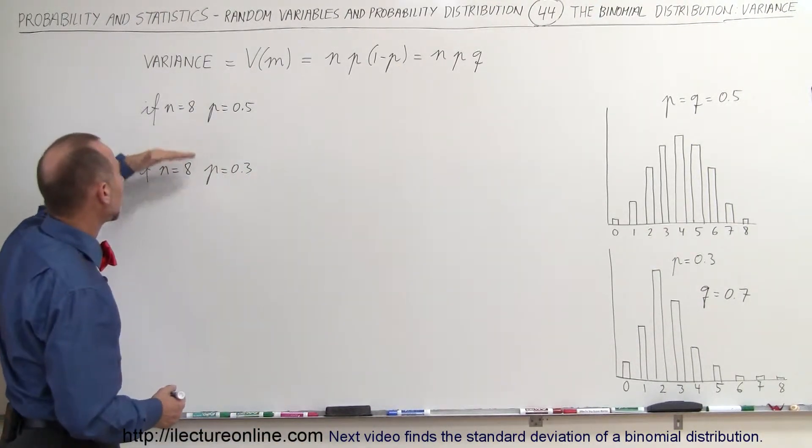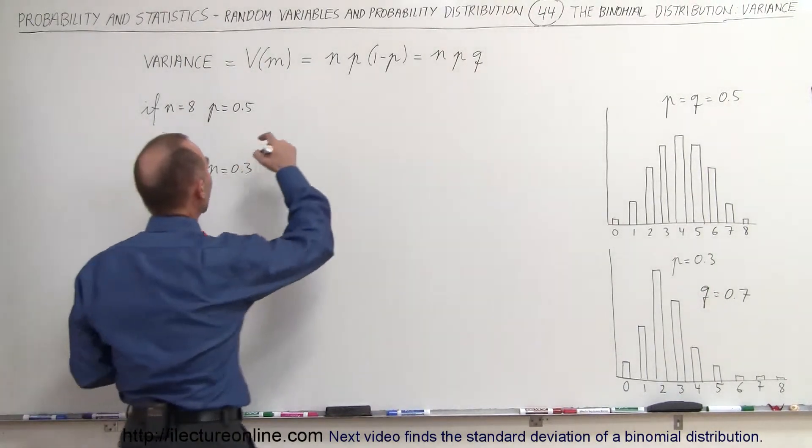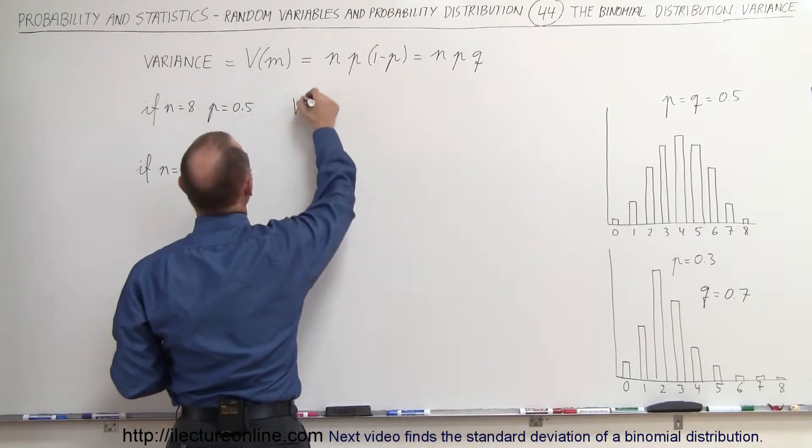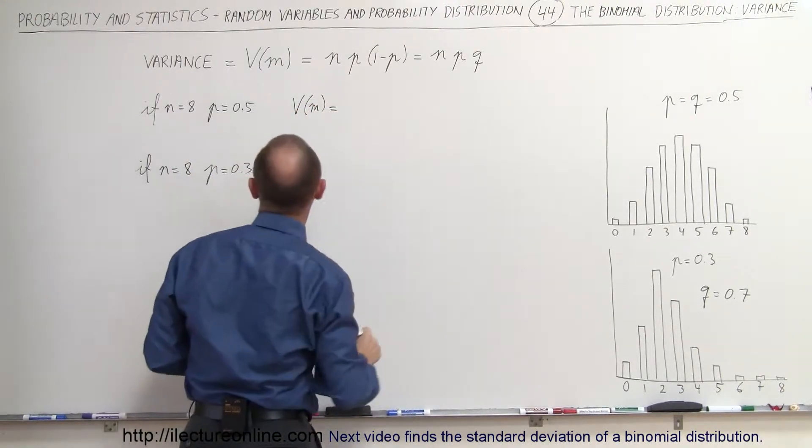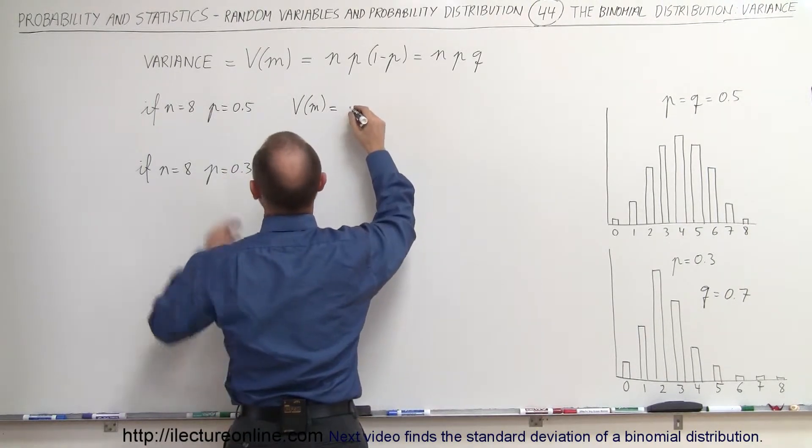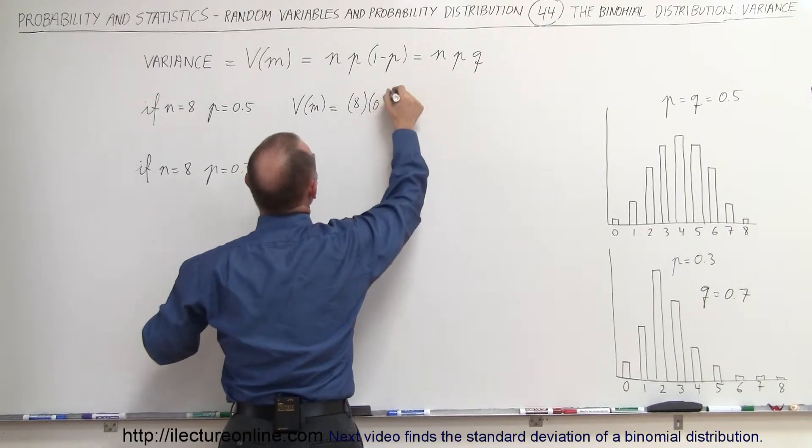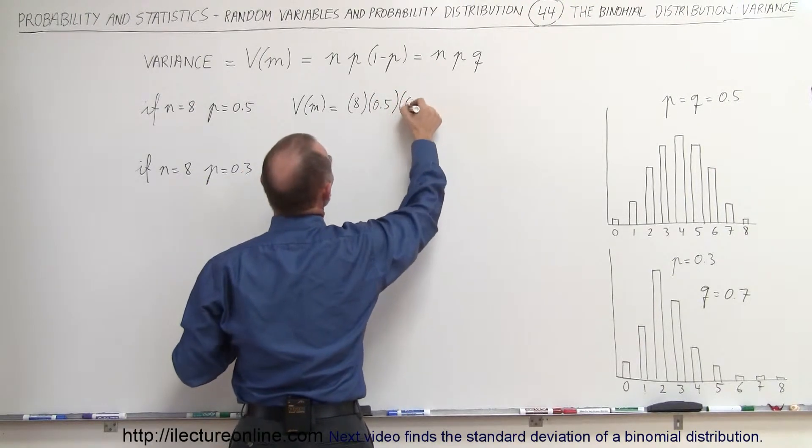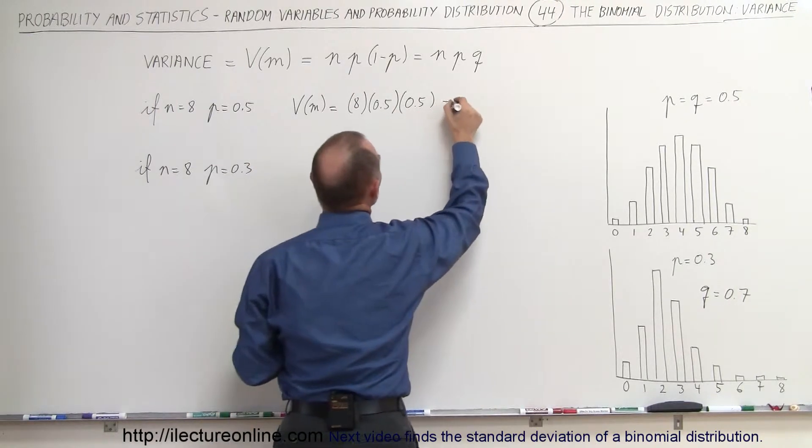We'll go ahead and work that out in the two examples here. In the first case, the V sub m, the variance in the number of successes, would be equal to n, which is 8, times P, which is 0.5, times 1 minus P, which is Q, which is 0.5. So 0.5 times 0.5 times 8 equals 2.